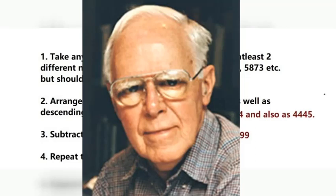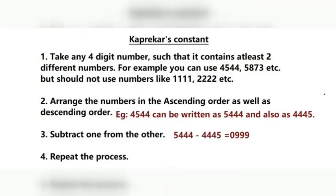What is Kaprekar's Constant? Take any four-digit number. The only condition is that those four-digit numbers should have at least two different digits. That means they should not have one single digit for everything — you should not have 1111, 2222, etc. You can have different numbers like 4544 or 5873.